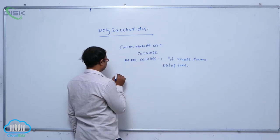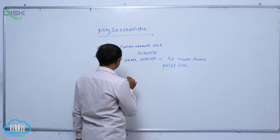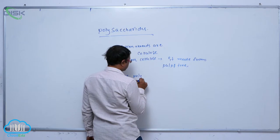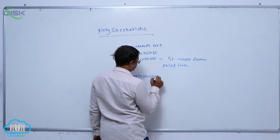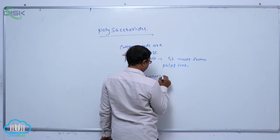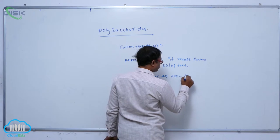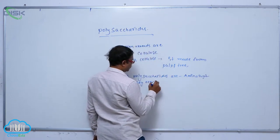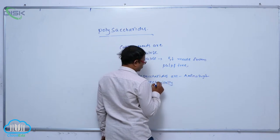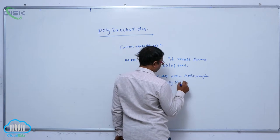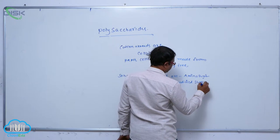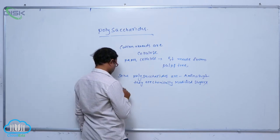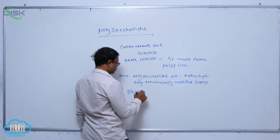Some polysaccharides are complex. Some polysaccharides are amino sugars — they are chemically modified sugars that act as their building blocks. For example, Glucosamine.